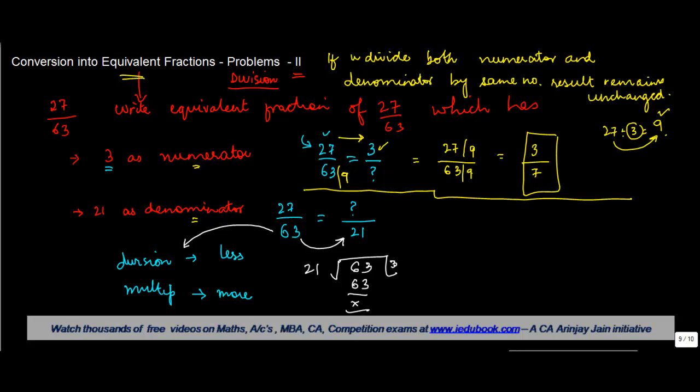Hence we understand that 63 has been divided by 3 to get 21. Now if these two are equivalent fractions, then we need to divide the numerator also by the same number, which is 3, and when we do that we get 9. So this is the equivalent fraction of 27 by 63 where the denominator is 21.